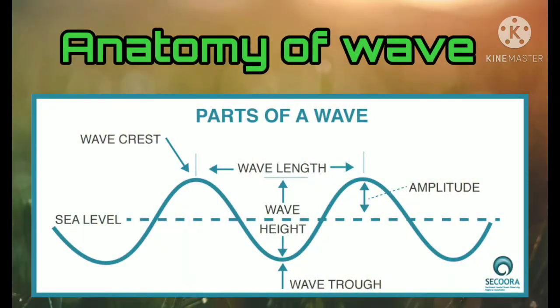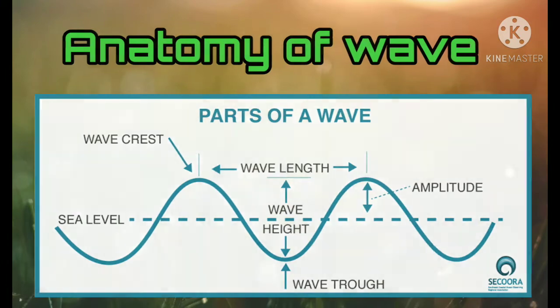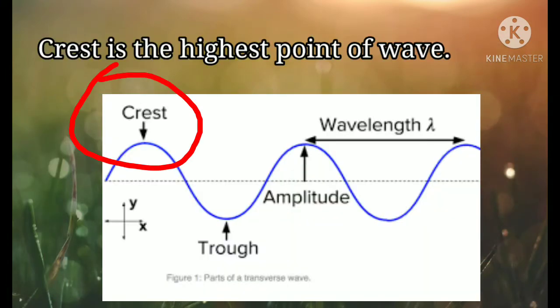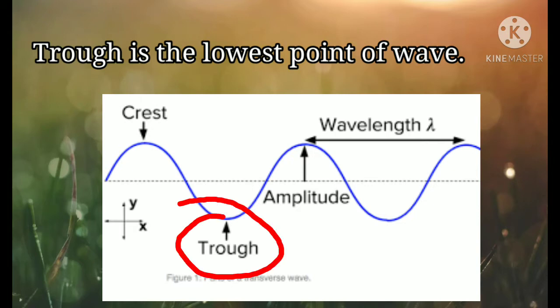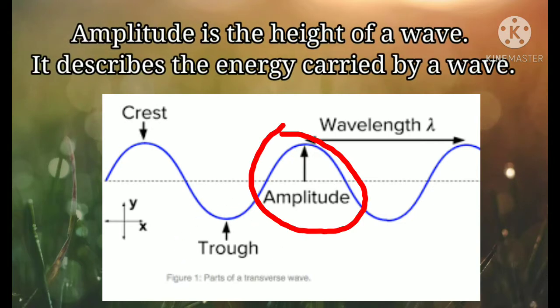Let's proceed to the anatomy of wave. Crest is the highest point of a wave. Trough is the lowest point of a wave. Amplitude is the height of a wave. It describes the energy carried by a wave.